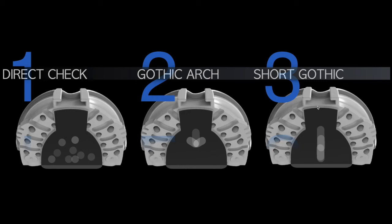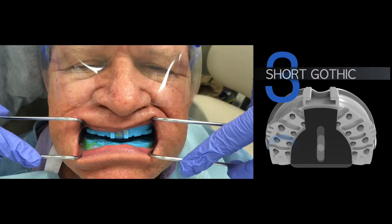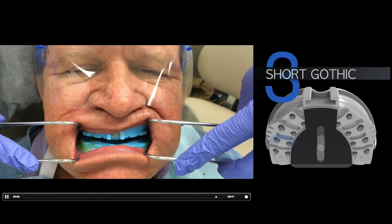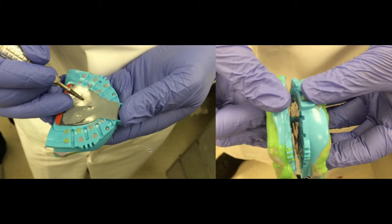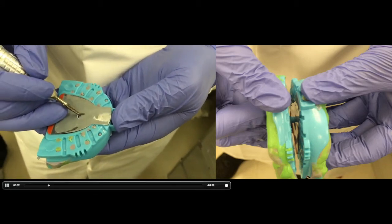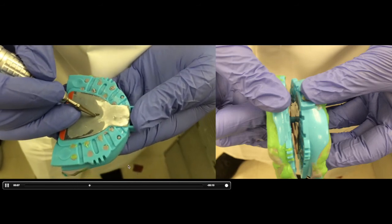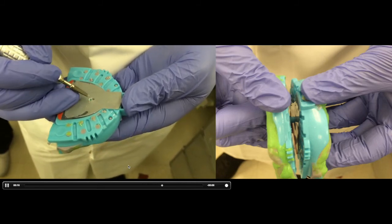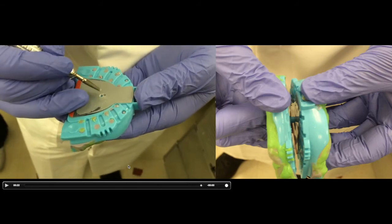You can also use the short gothic arch tracing for patients who have difficulty reproducing lateral movement. This involves only asking for protrusive movement — move forward and backward. The most posterior position of the line is the centric relation mark. This gives you a small line, and the most posterior end is the centric relation position. We drill a one-millimeter dimple into the plate to lock in the CR position on the tray.